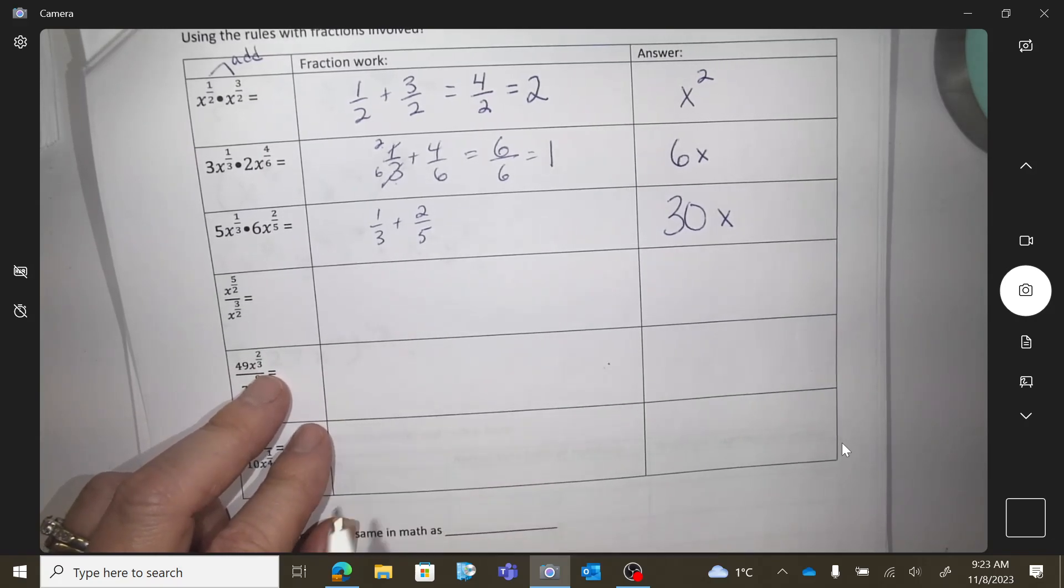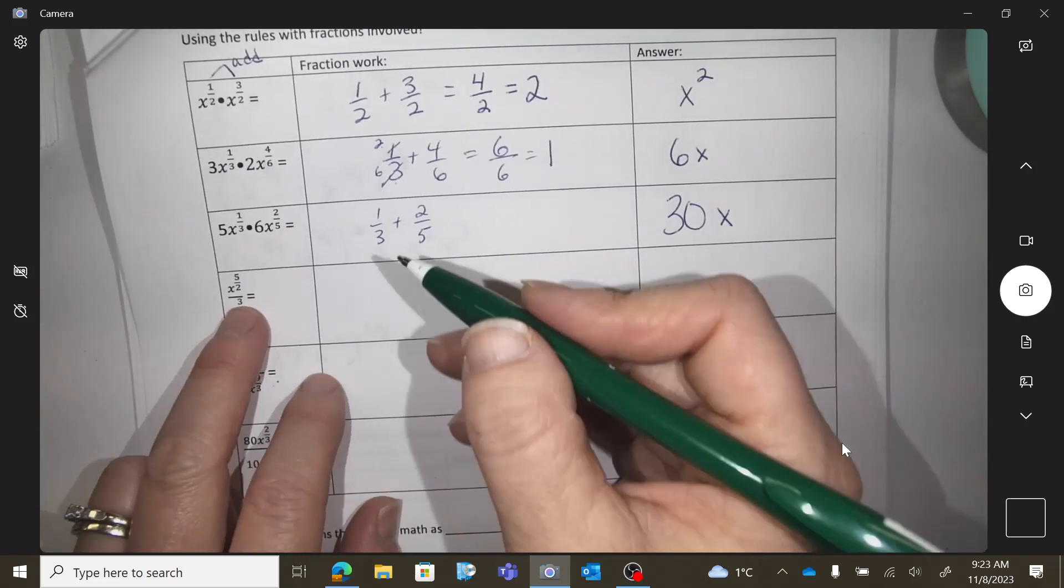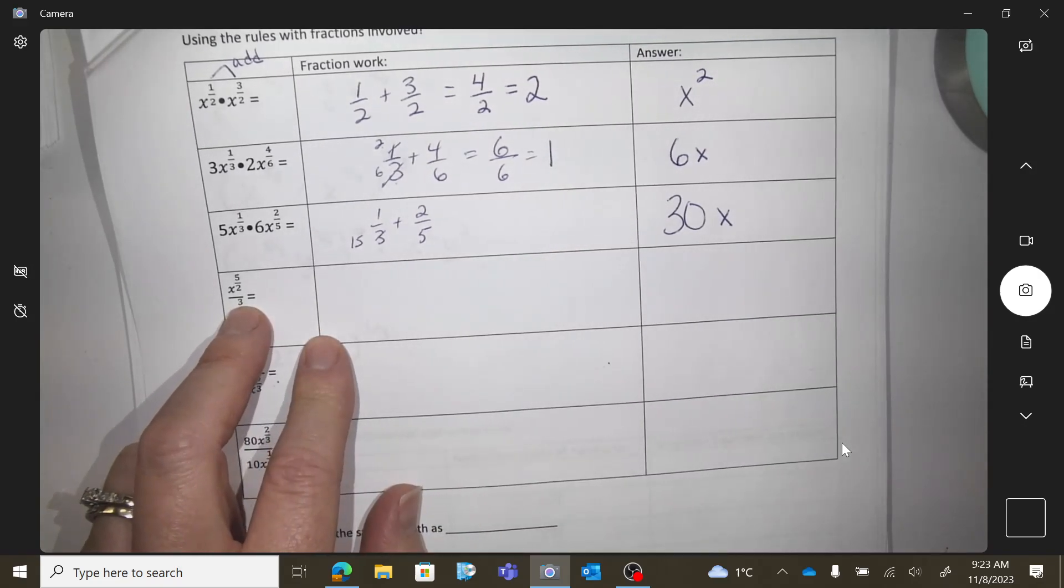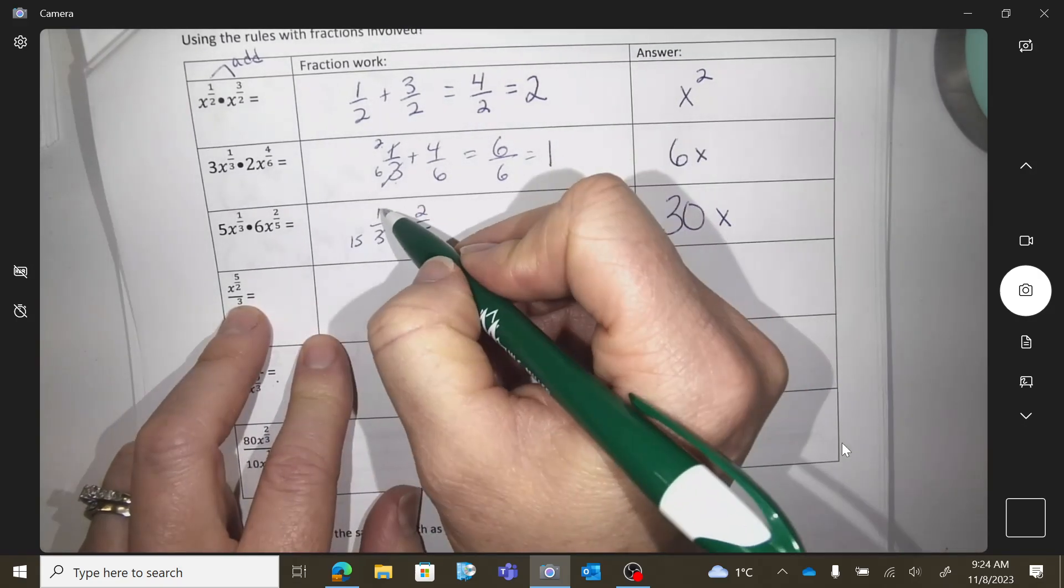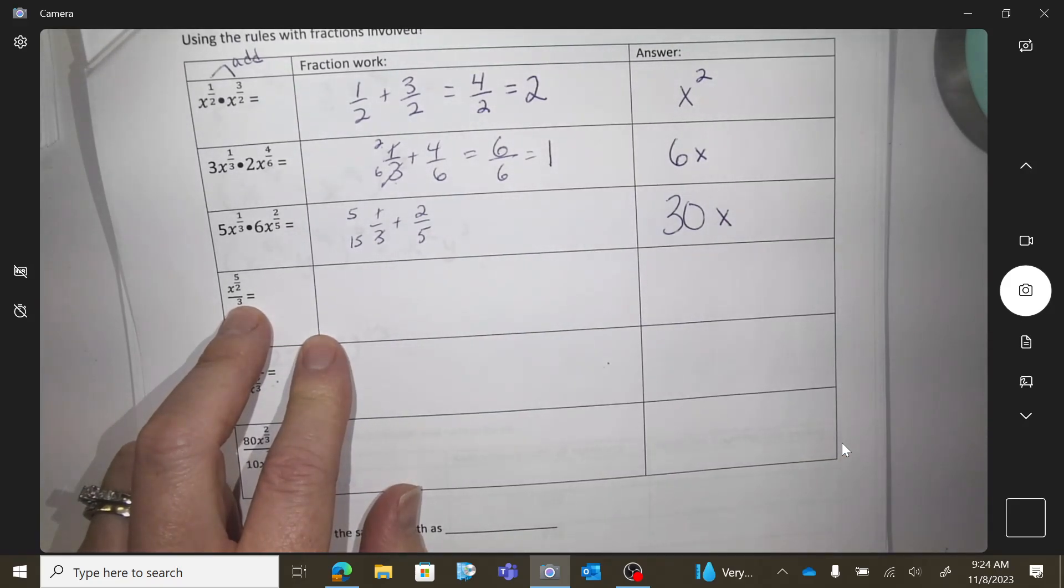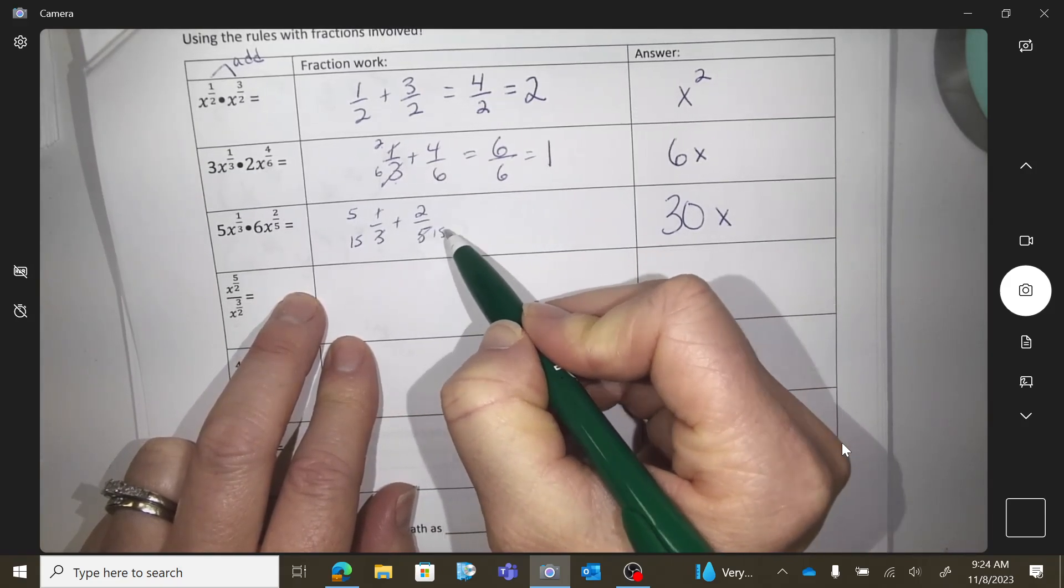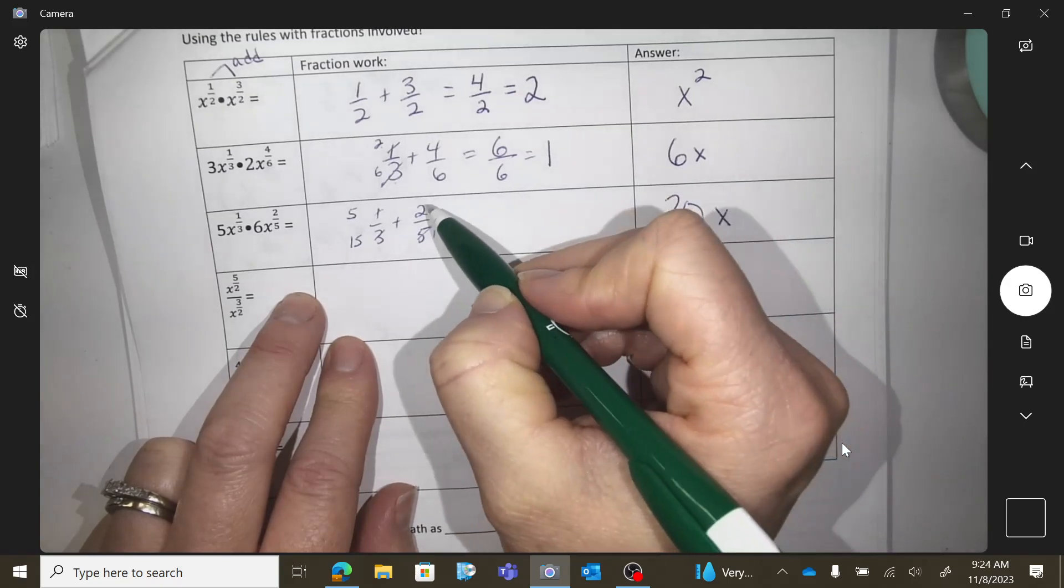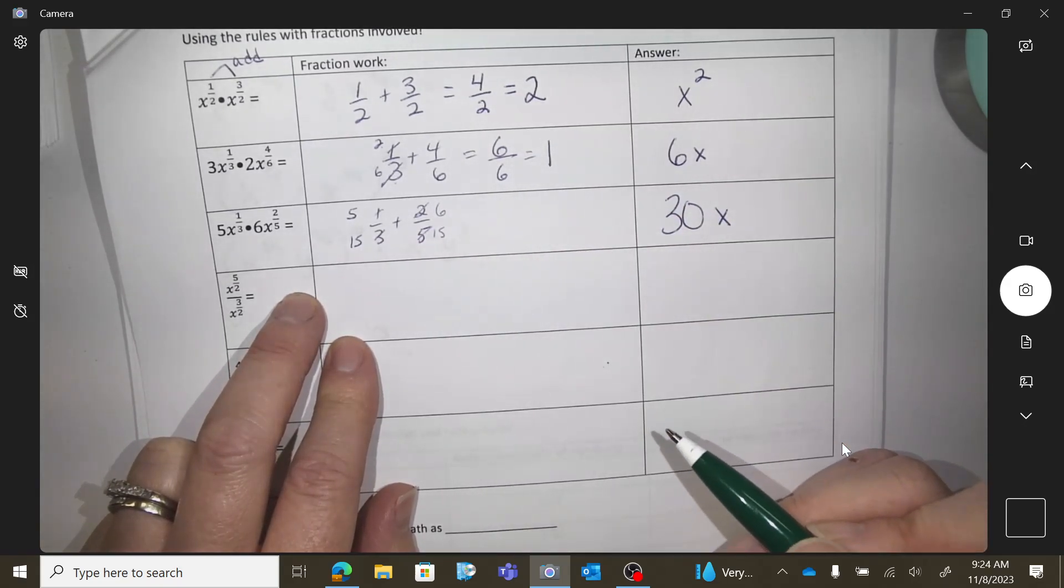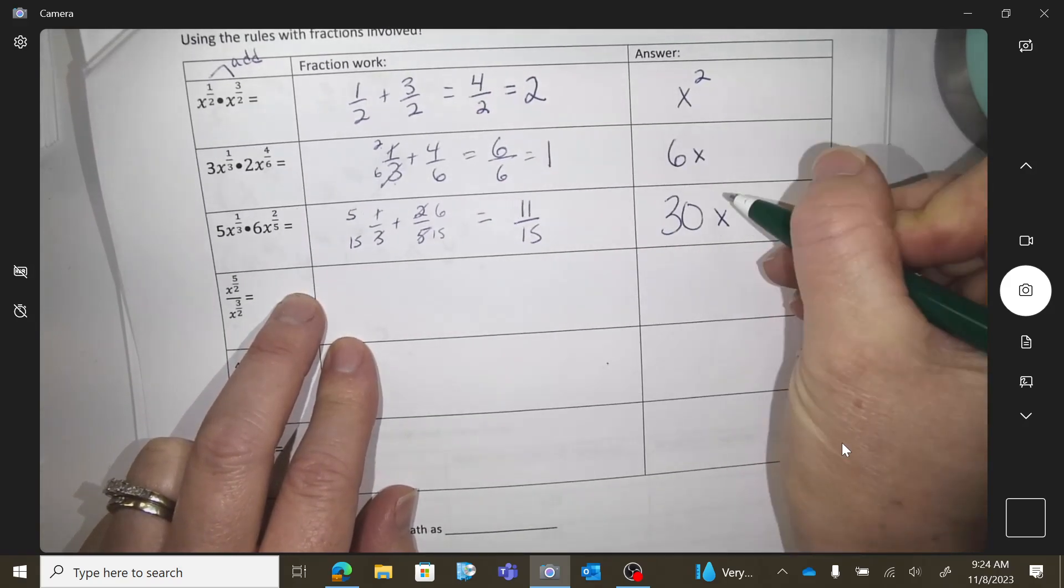What number do you want to use to make them the same thing? 15. So this I want to change into a 15, so I'm going to multiply it by 5. So that would become a 5. And a 5 I'd like to turn into 15, which means I'd be multiplying it by a 3. So multiply it by 3. So I get 11 over 15.